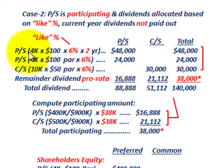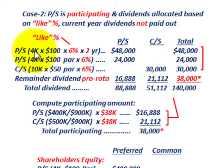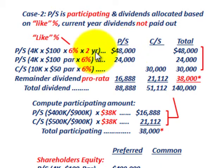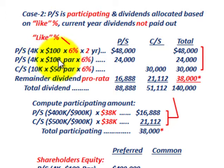Starting with preferred stock: dividends in arrears are 2 years at 6% on 4,000 shares at $100 par, so preferred stock is allocated $48,000 for arrears. Remember, preferred stock gets paid before common stock. For the current year, 4,000 shares at $100 par at 6% gives $24,000 for the current year's preferred dividend.